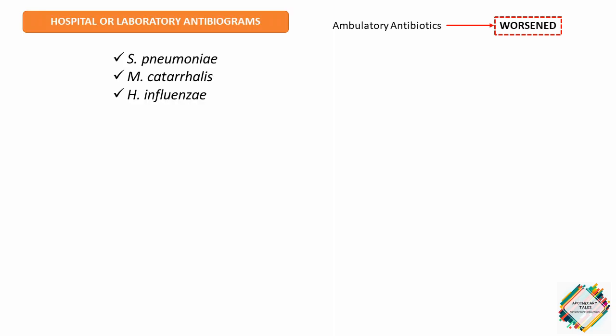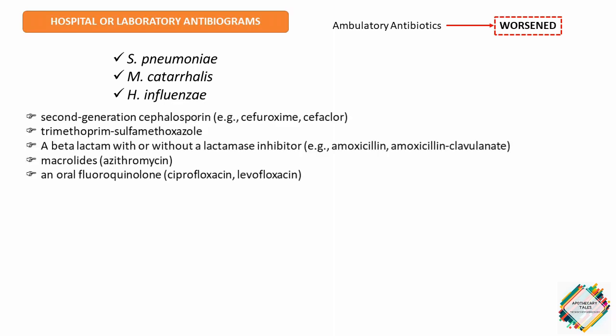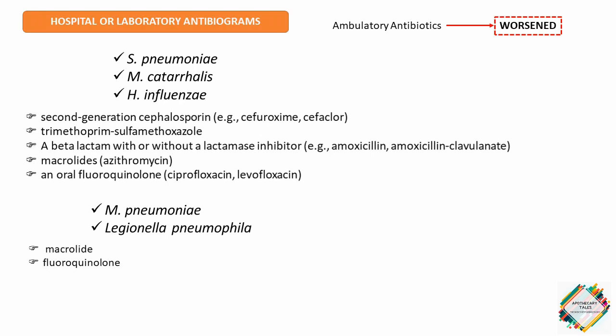For Streptococcus pneumoniae, M. catarrhalis, and H. influenzae, agents may include a 2nd-generation cephalosporin (e.g., cefuroxime, cefaclor), trimethoprim-sulfamethoxazole, beta-lactam with or without a beta-lactamase inhibitor, macrolides, or an oral fluoroquinolone such as levofloxacin or ciprofloxacin. Recent evidence indicates chronic macrolides may have a role in decreasing COPD exacerbations. If infection with M. pneumoniae or Legionella pneumophila is a concern, a macrolide or fluoroquinolone may be added.